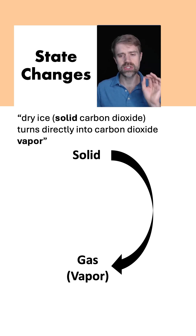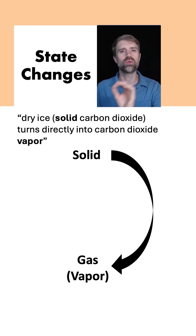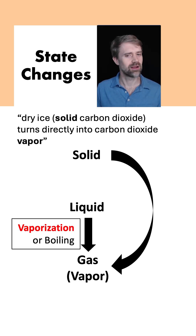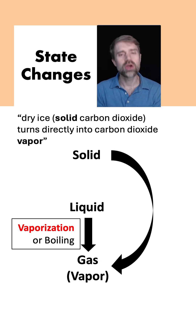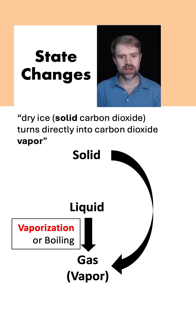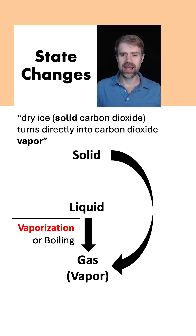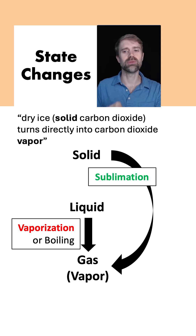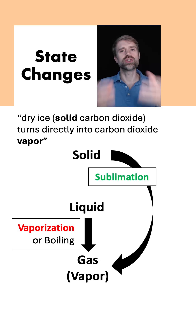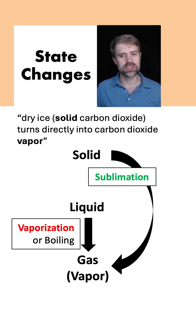What do we call it when a solid turns directly into gas or vapor? Many people think the answer is vaporization — no. Vaporization is the name for liquid turning into gas or vapor; we might call this process boiling. The process of solid turning directly into gas is sublimation. The solid turns directly into gas — it doesn't become liquid first; it goes right from solid to gas. Sublimation.